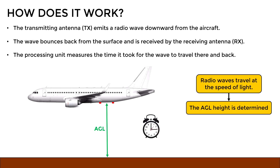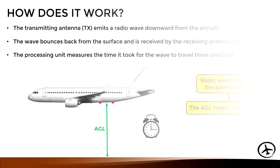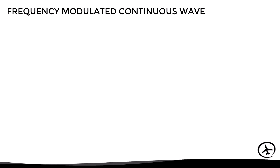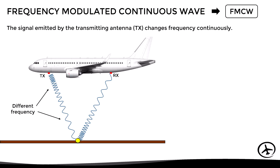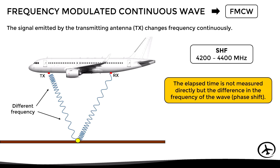Although this is the basic principle of operation, modern radio altimeters actually work in a slightly different way, since they use a frequency-modulated continuous wave system. Here, the signal emitted by the transmitting antenna changes its frequency continuously within the range of 4200 and 4400 MHz. With this system, the elapsed time is not measured directly, but the difference in the frequency of the wave — or in other words, the phase shift.